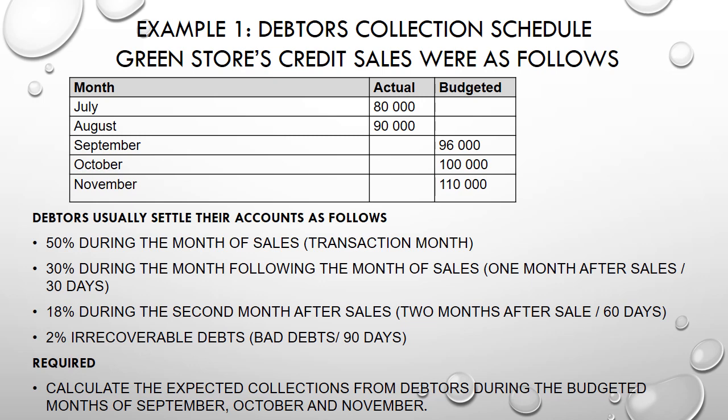It also continues, saying 18 percent is payable during the second month after the sale. The sales were made in July; August was the first month after the sale, so September will be our second month after the transaction, meaning the debtor will also come back and settle 18 percent of the sales that took place in July. When you add all these percentages — 50 + 30 + 18 — it gives us 98 percent, which means there is 2 percent the debtor hasn't paid. That 2 percent we're going to write off as irrecoverable debt or bad debts.